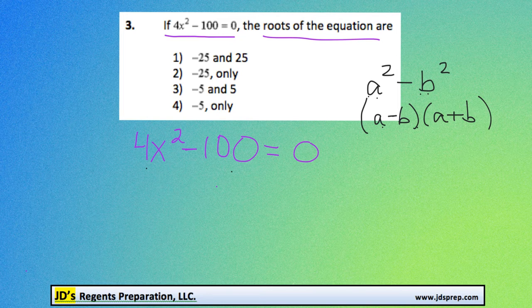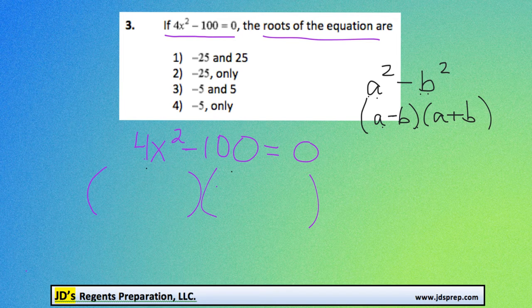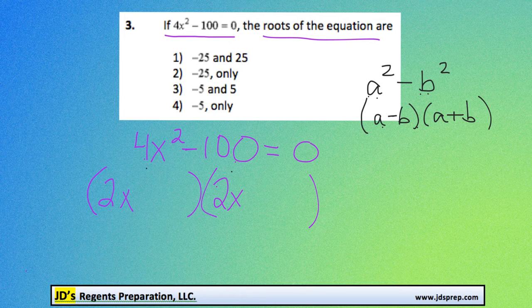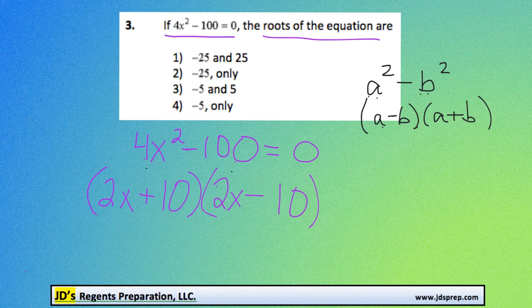Alright, so back to the question. If we were to factor this, the square root of 4x squared would be 2x, and the square root of 100 is, of course, 10. And all we need to do is add one and subtract the other. This whole thing is still equal to 0.